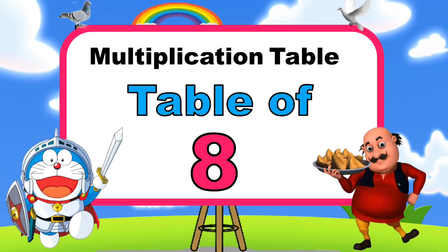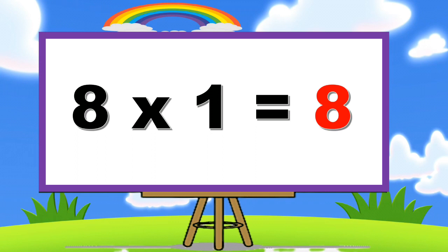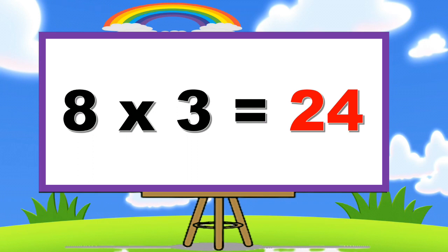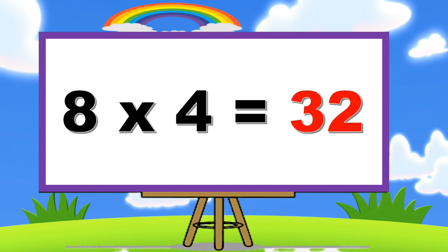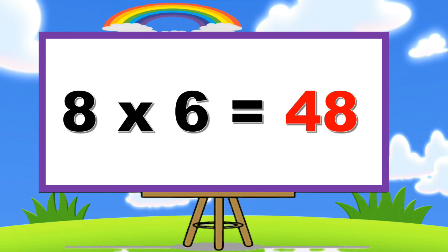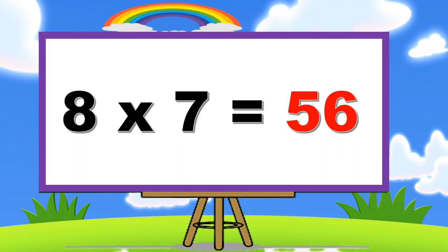Eight ones are eight. Eight twos are sixteen. Eight threes are twenty-four. Eight fours are thirty-two. Eight fives are forty. Eight sixes are forty-eight. Eight sevens are fifty-six.